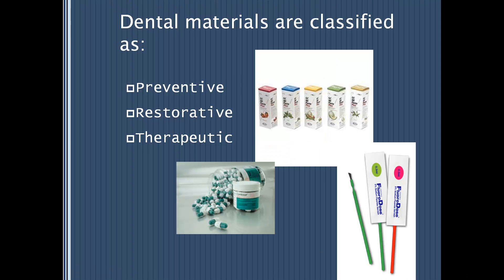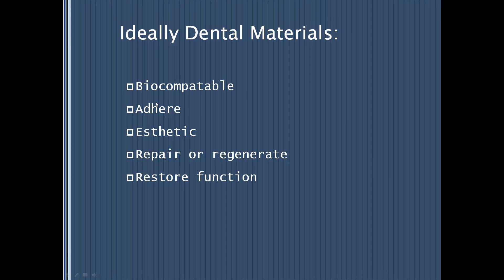Restorative materials, which we spend a lot of time on, include amalgam and composite — materials used in creating crowns and bridges. Therapeutic materials include fluoride, which calms dental sensitivity when there is gingival recession, and IRM, which calms the nerve down. IRM is a derivative of oil of clove and has a therapeutic benefit.